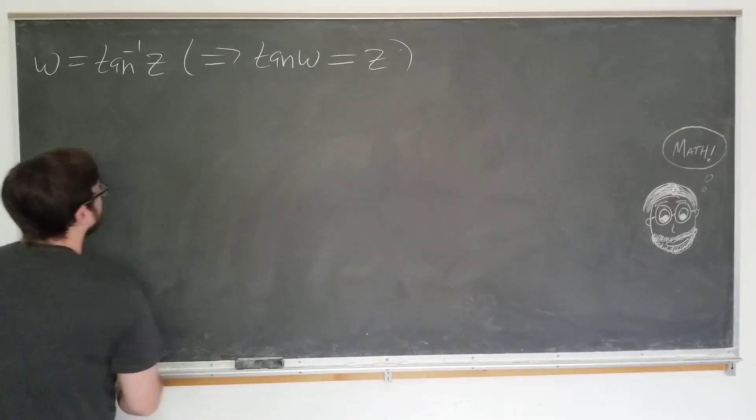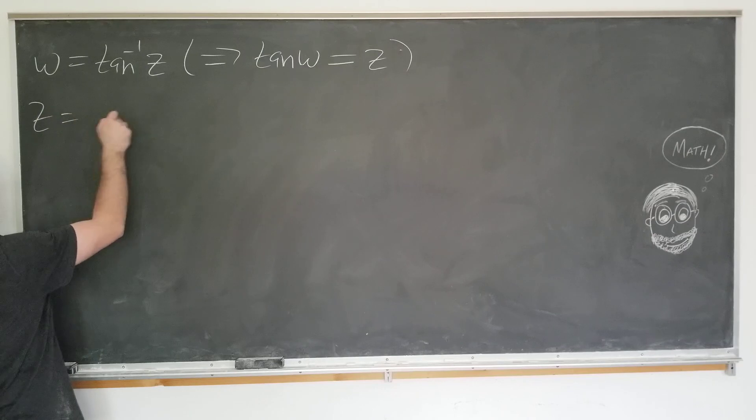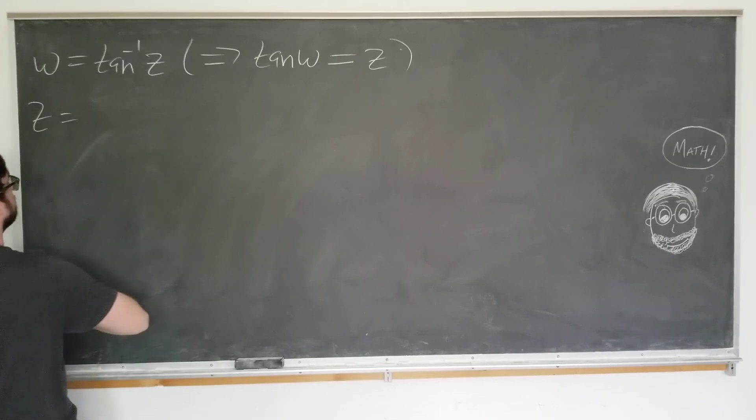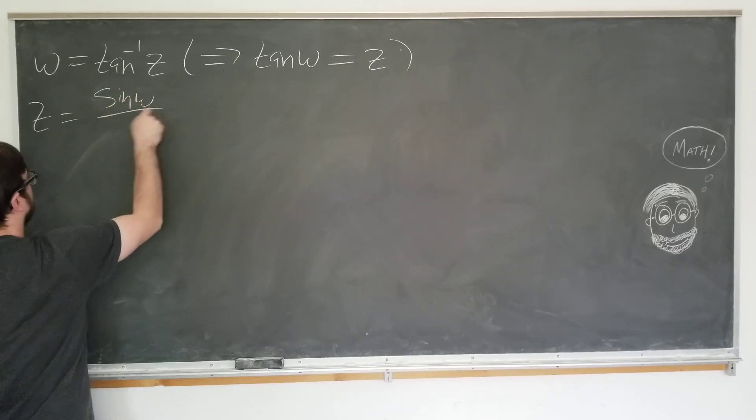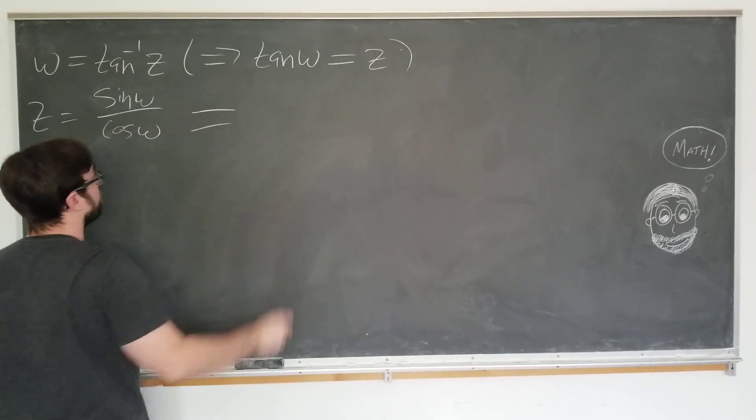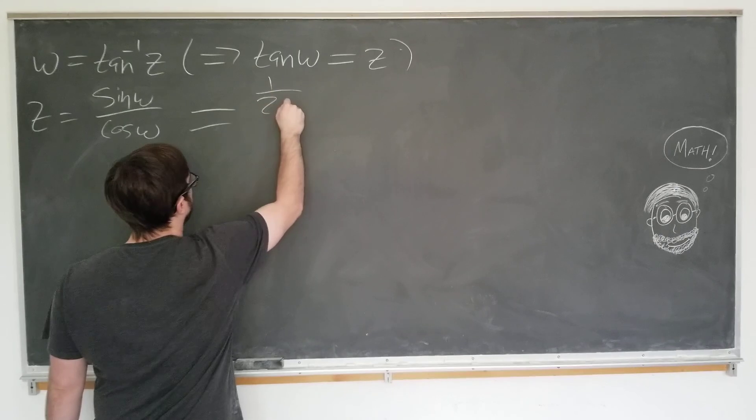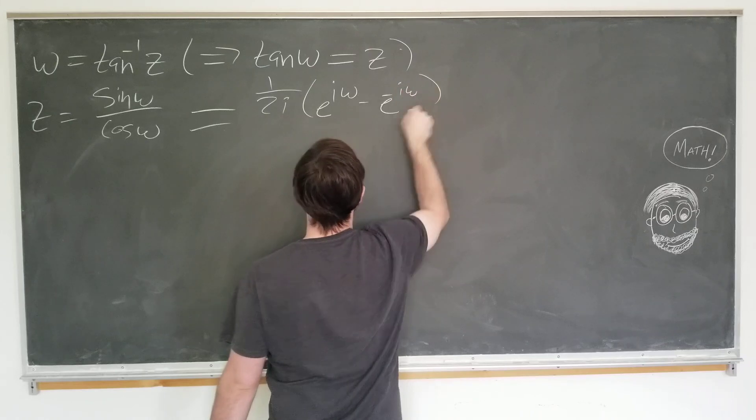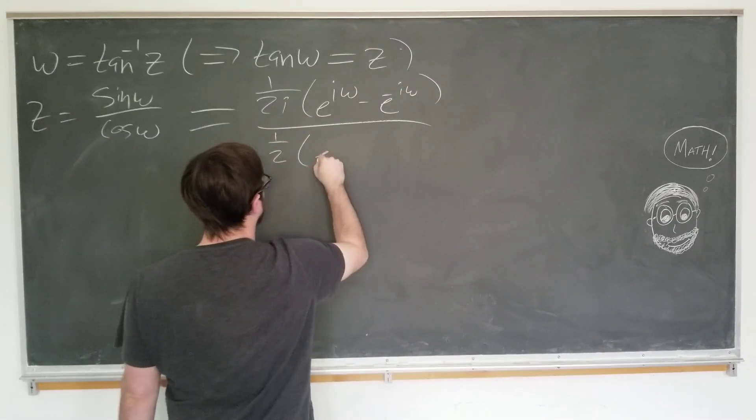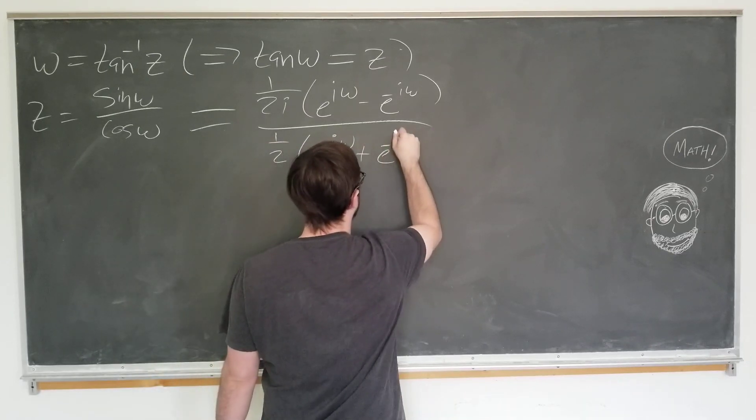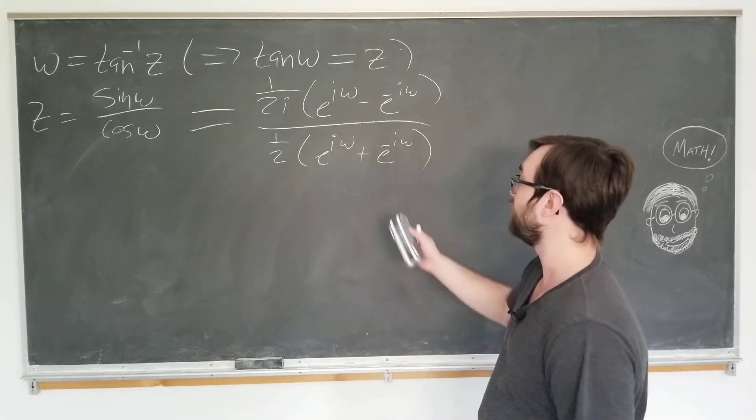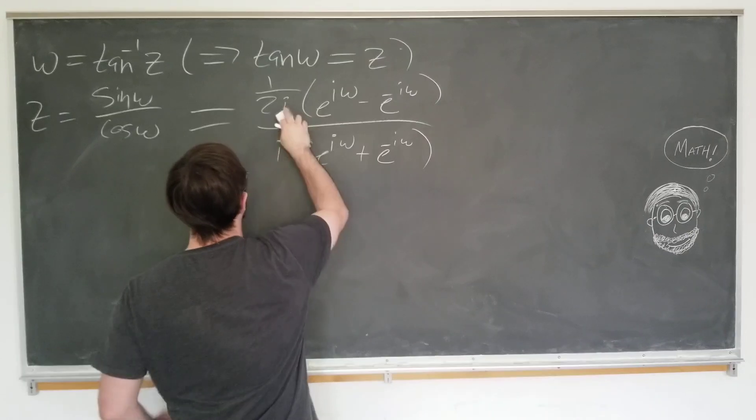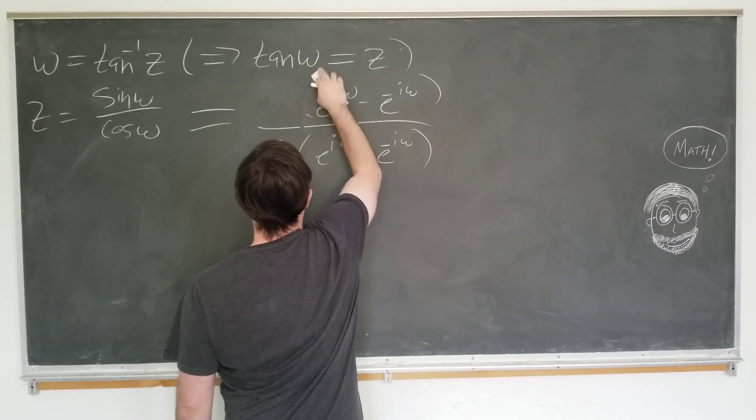If we let z equal to tangent omega, it's going to be sine omega over cosine omega, which we know from elementary complex number theory can be 1 over 2i, e to the i omega minus e to the minus i omega, over 1 half e to the i omega plus e to the minus i omega. Of course, the 1 halves cancel out, and we just have an i down here.